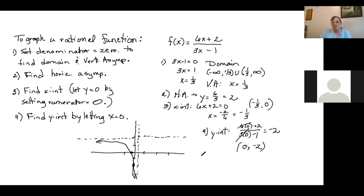Let me just plug in a 1. Let me get f of 1 just to see what's going on over here. f of 1 would be 6 times 1 plus 2 over 3 times 1 minus 1 would be 6 plus 2 is 8 over 3 minus 1 is 2 is 4. So the point 1, 4. Over 1, up 4 would be over here. So that tells me that this part of the graph's going to be up here.